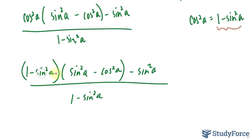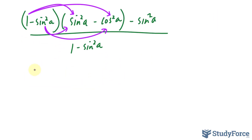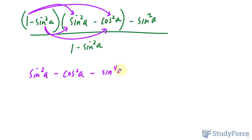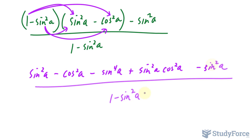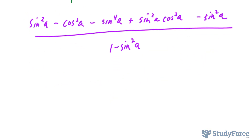We will now expand these two expressions — we have a binomial here and a binomial here. I'll multiply 1 times each term inside, and the same applies to the other term. That gives sine squared A minus cosine squared A. Now I'll multiply negative sine squared A into this and get negative sine to the power of 4A. Negative sine squared multiplied by that is positive sine squared A cosine squared A, and the rest stays the way it is. It's getting messy, but it needs to look bad before it starts to look better.